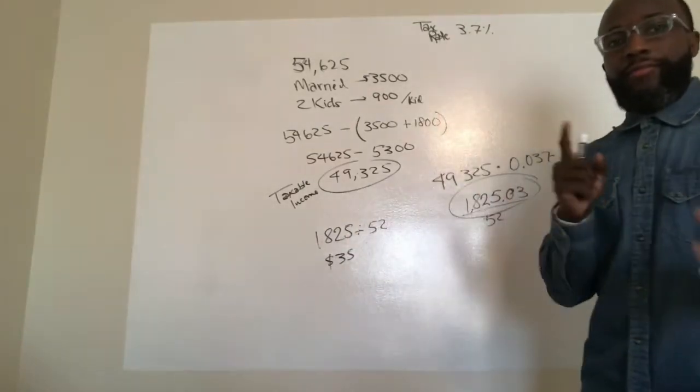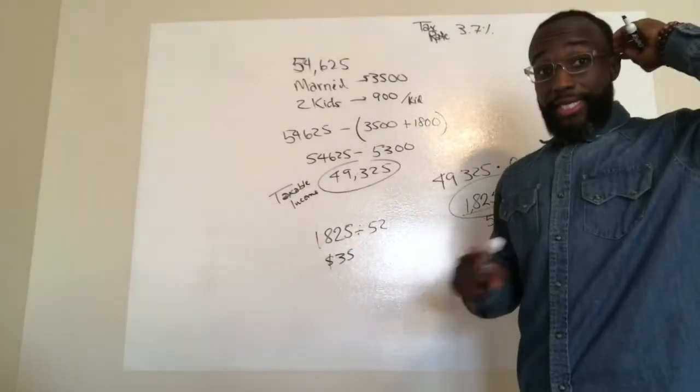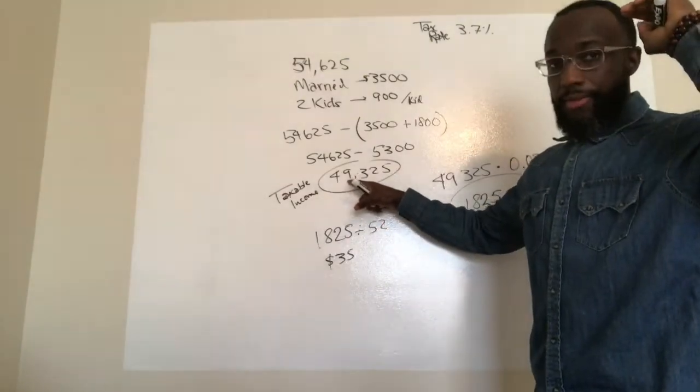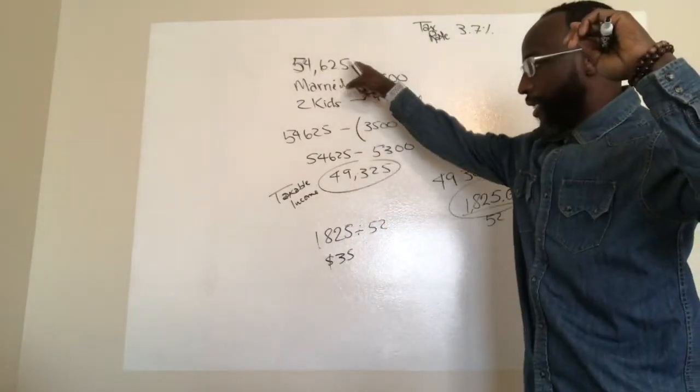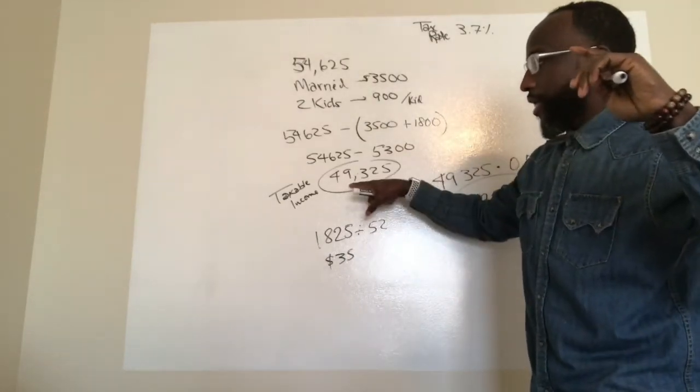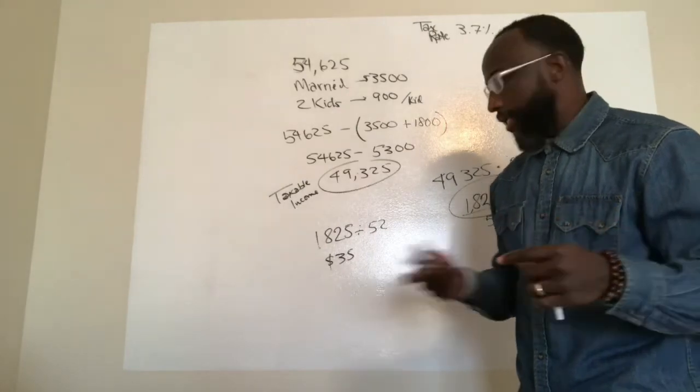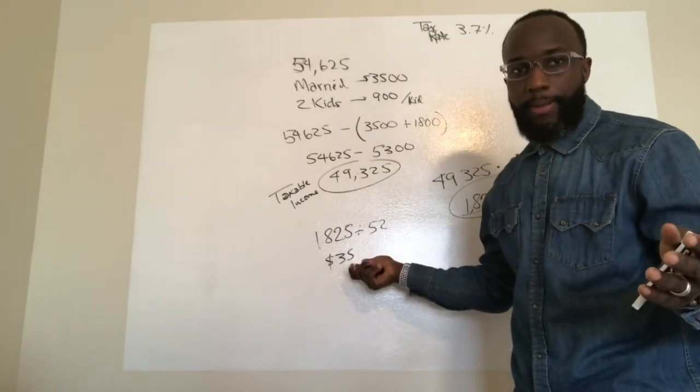So out of every weekly check, every check that you get, every check that you get for this year when you make this amount of money, well when you make this amount of money, you'll subtract $35 from your check. From whatever your, what your check is, $35 is going to be your state tax.